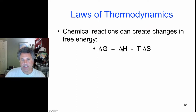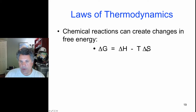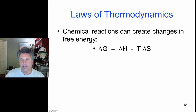Delta G, the free energy of the reaction, is dependent upon the relative values of the change in enthalpy and the change in entropy or disorder, assuming a constant temperature. Delta G can be either positive or negative depending upon the relative values of delta H and T delta S.